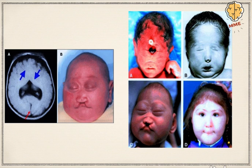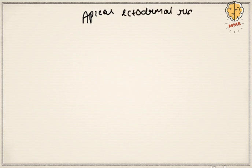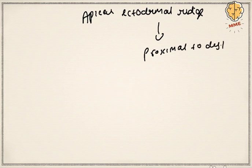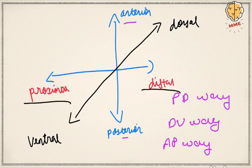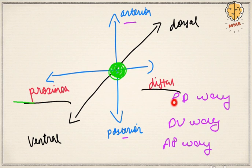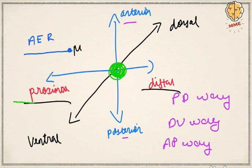The next structure is the apical ectodermal ridge (AER), which is critical for proximal-to-distal development. The AER lays out a path for limb growth from proximal to distal; if it is lost, the limb stops growing at that point. AER has a key transcription factor which is FGF (fibroblast growth factor). Both FGF and AER share the same role of proximal-to-distal development.